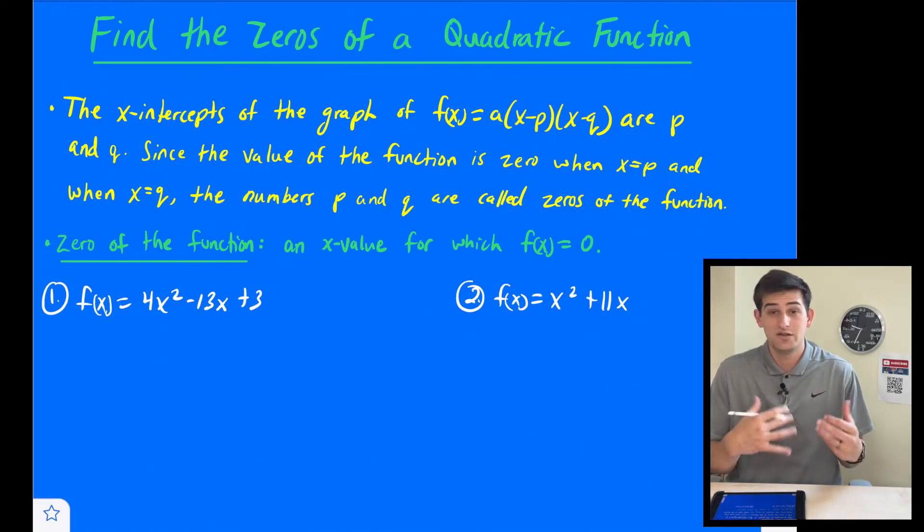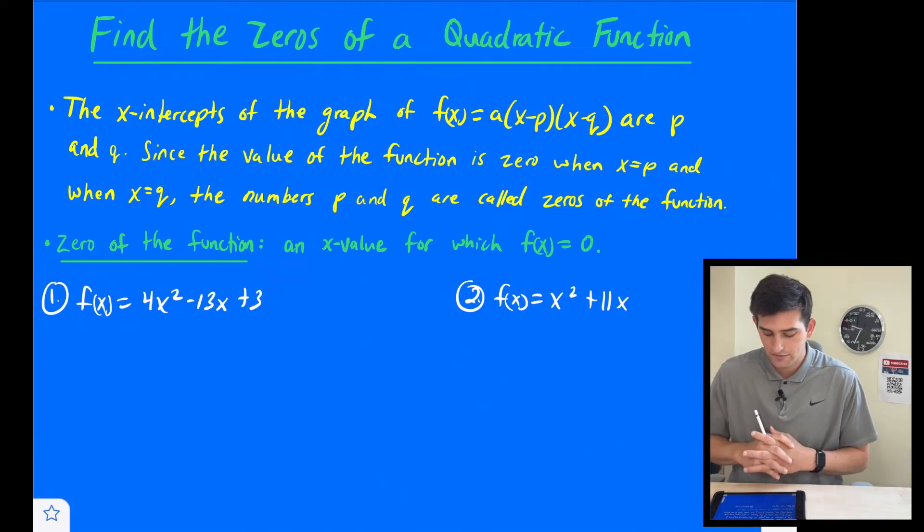So what does this term zeros mean? Well, it takes us back to intercept form of a quadratic function. It says the x-intercepts of the graph of f(x) = a(x - p)(x - q), that's our intercept form, are p and q.